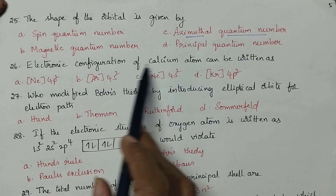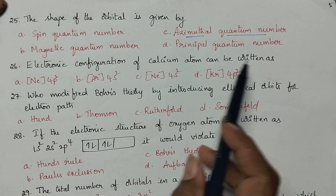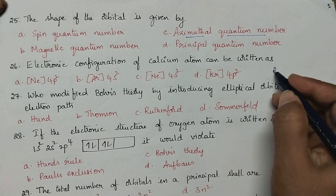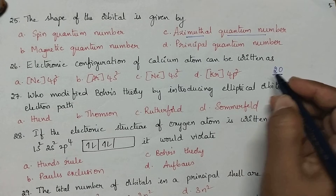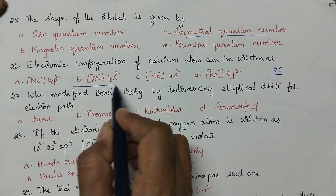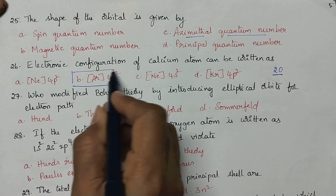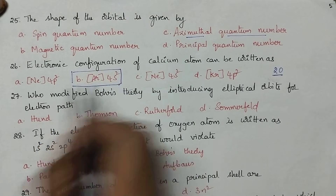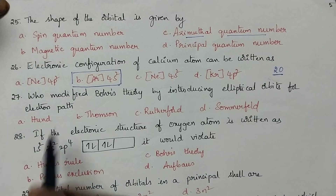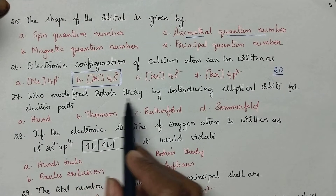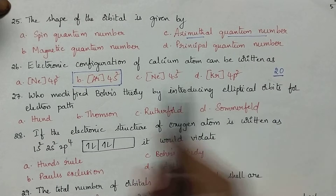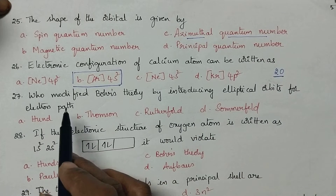Electronic configuration of calcium atom: the atomic number of calcium is 20 and its nearest noble gas is argon. So the right option is argon, and 4s2 is the electronic configuration of calcium.